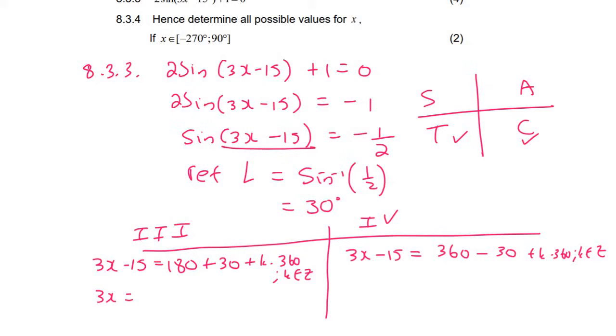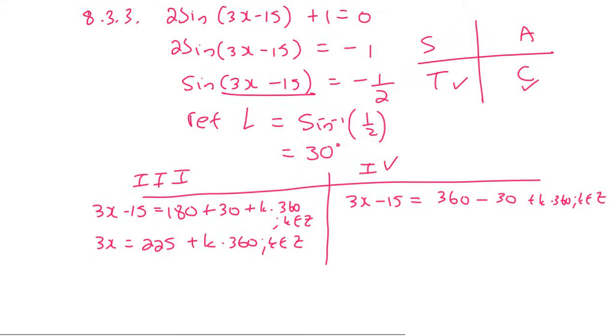So this one's going to give us 3x equals to 225 eventually. And so that's going to give us x equals to 75 plus k times 120, k is an element of z.